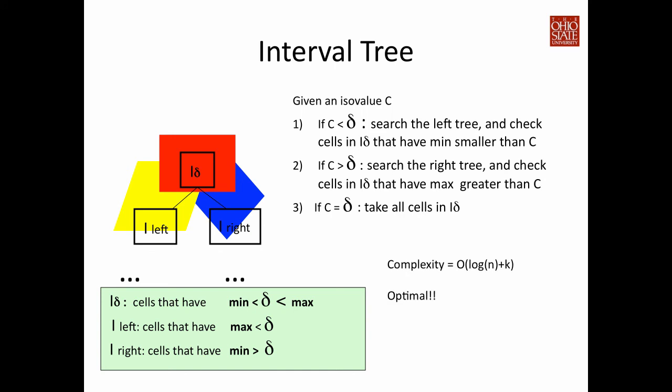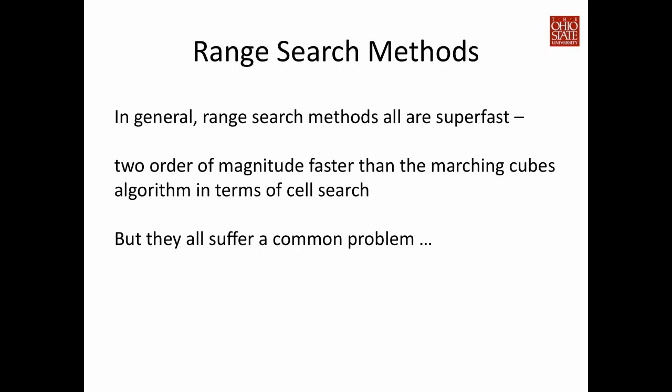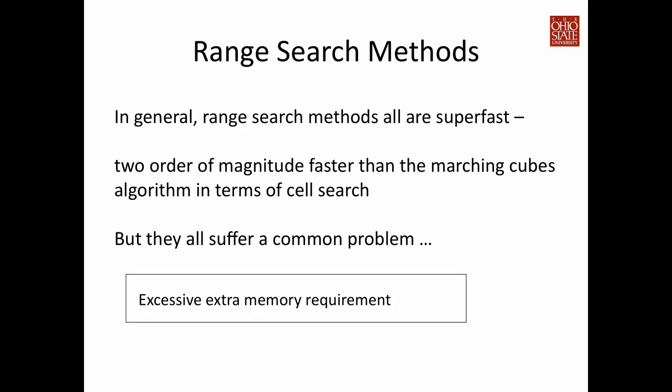The interval tree algorithm is declared optimal: without considering tree construction cost, the search complexity is O(log n + k), where k is the number of isosurface cells and n is the total number of cells. Since this is a search algorithm, logarithmic complexity is typically the best achievable. Compared to Marching Cubes, all three search algorithms presented are much faster — sometimes two orders of magnitude faster. However, they all come with a cost: for every cell you need to store the min-max value and sort them in various ways, requiring extra storage and preprocessing time.